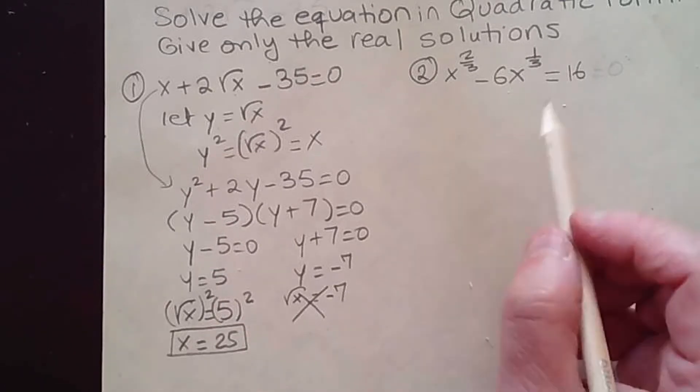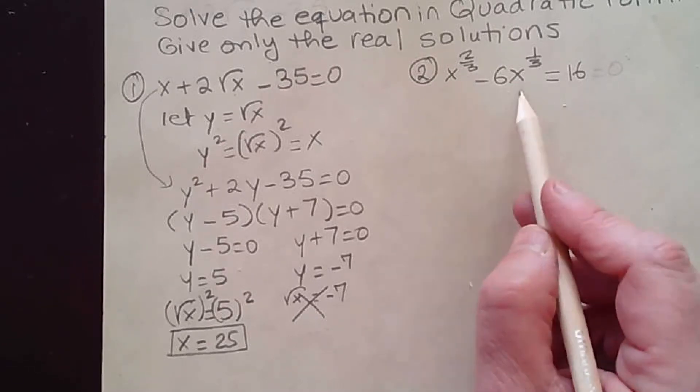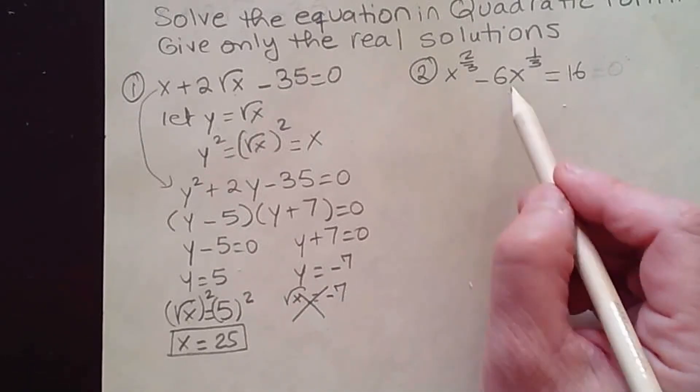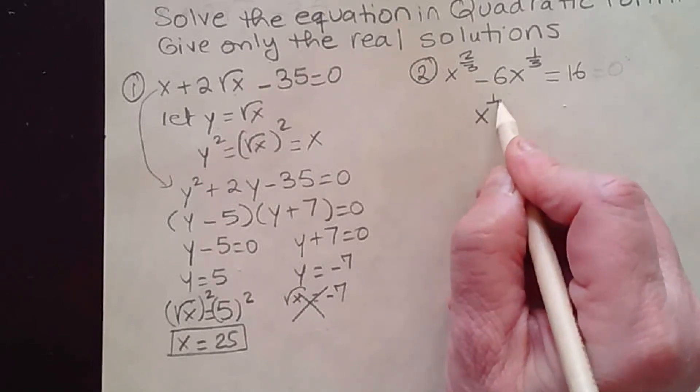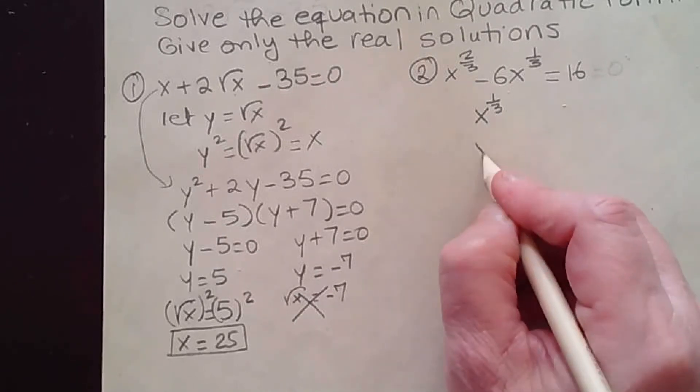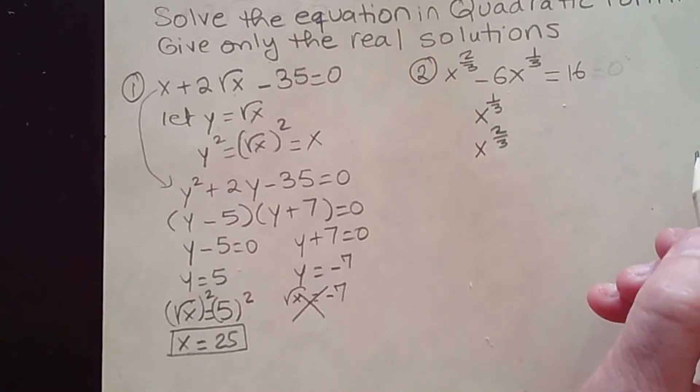Now going to our second problem, you have x to the 2/3 minus 6x to the 1/3 equals 16. Now if you take a look at the middle term, x to the 1/3, if you square that value, you're going to get x to the 2/3.